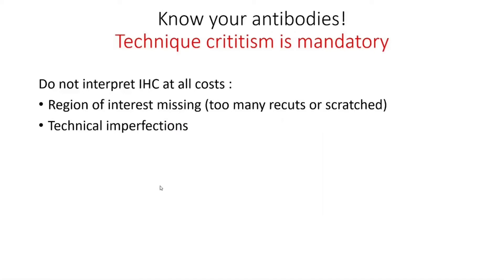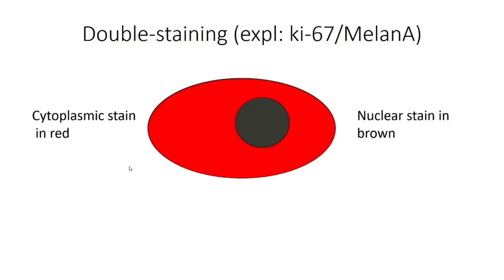Lastly, you need to be critical about your technique and you do not want to interpret your IHC at all costs. Sometimes the region of interest is missing because there have been too many recuts or it has been scratched by the technician according to Murphy's Law. There can also be some technical imperfections. Sometimes you can use double staining — one of the most frequent examples is Ki67 combined with Melan-A, where you have a cytoplasmic stain of Melan-A in red and a nuclear stain in brown for the proliferation index.